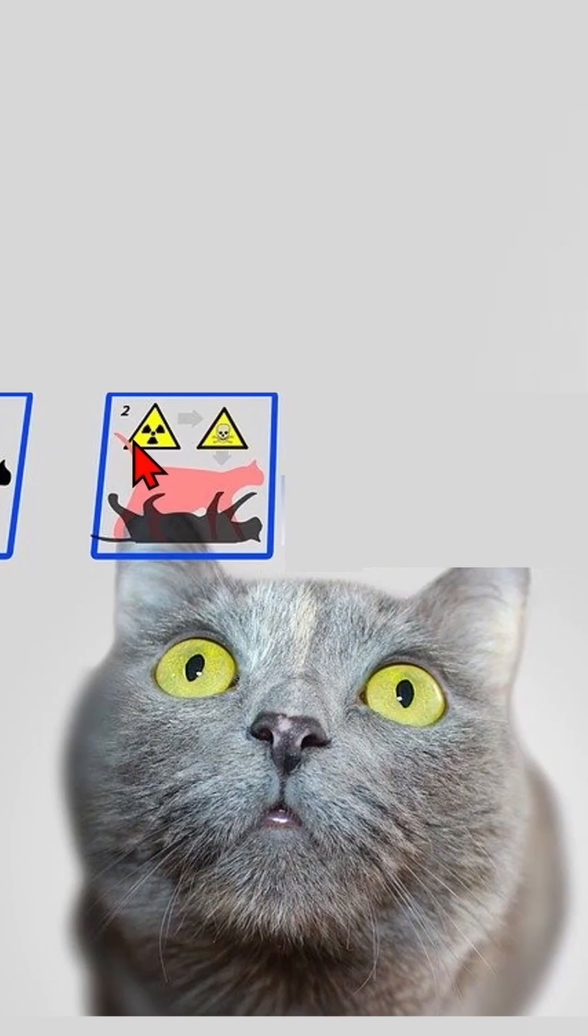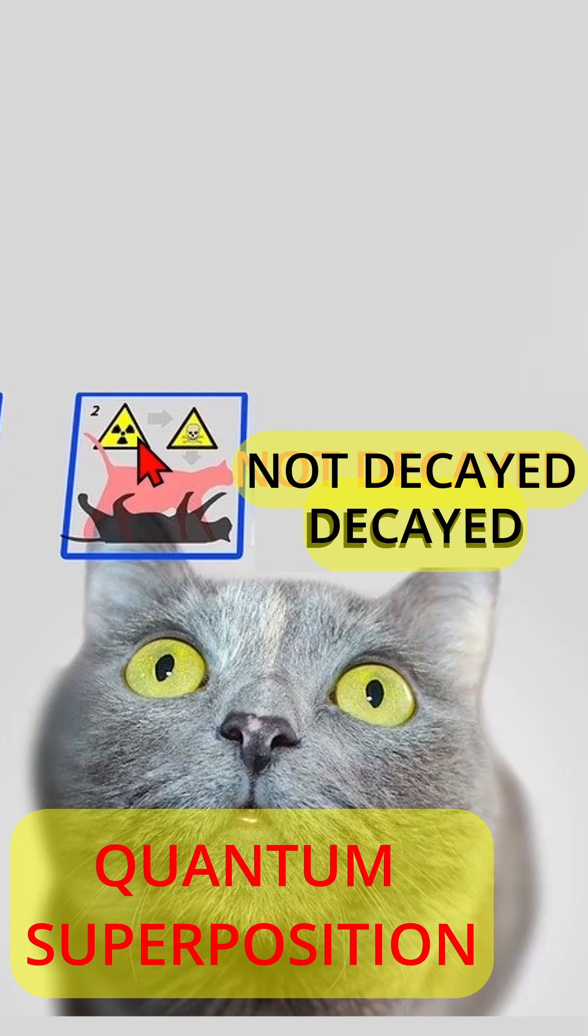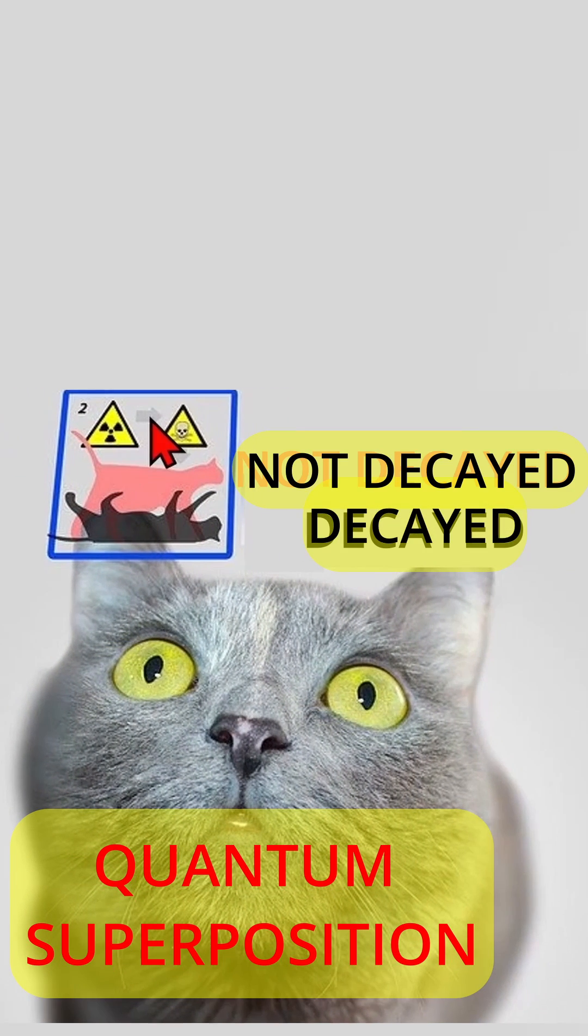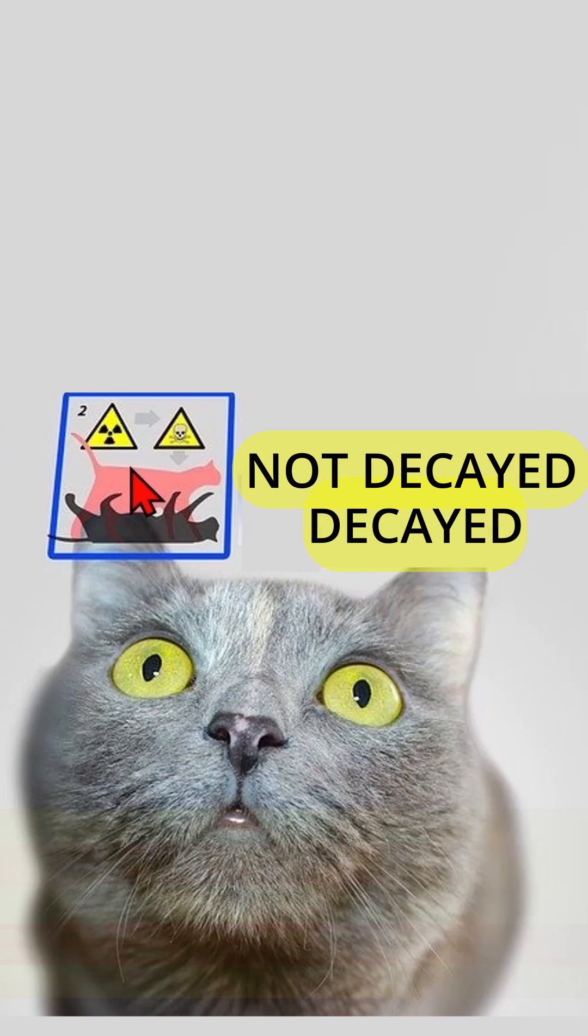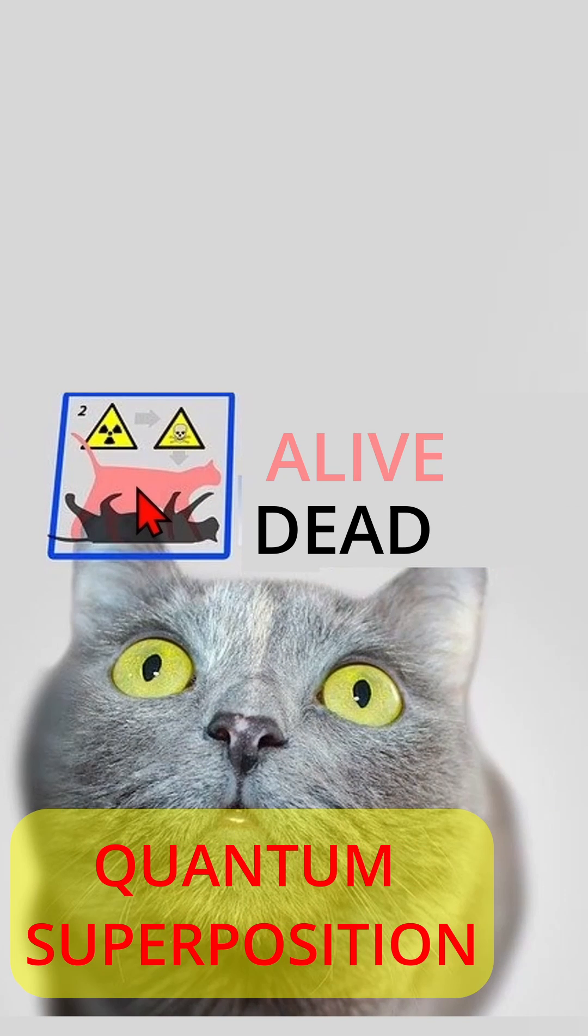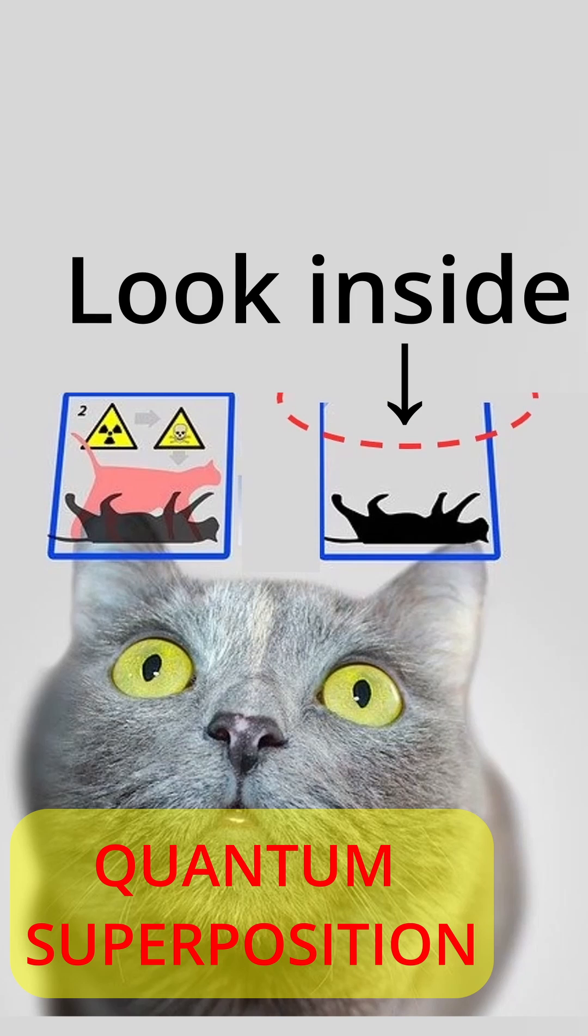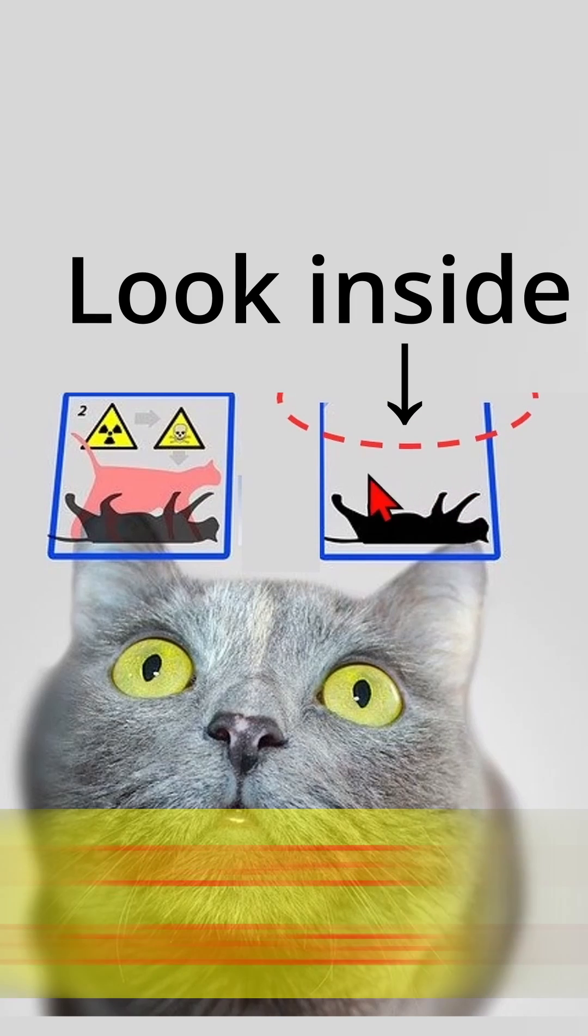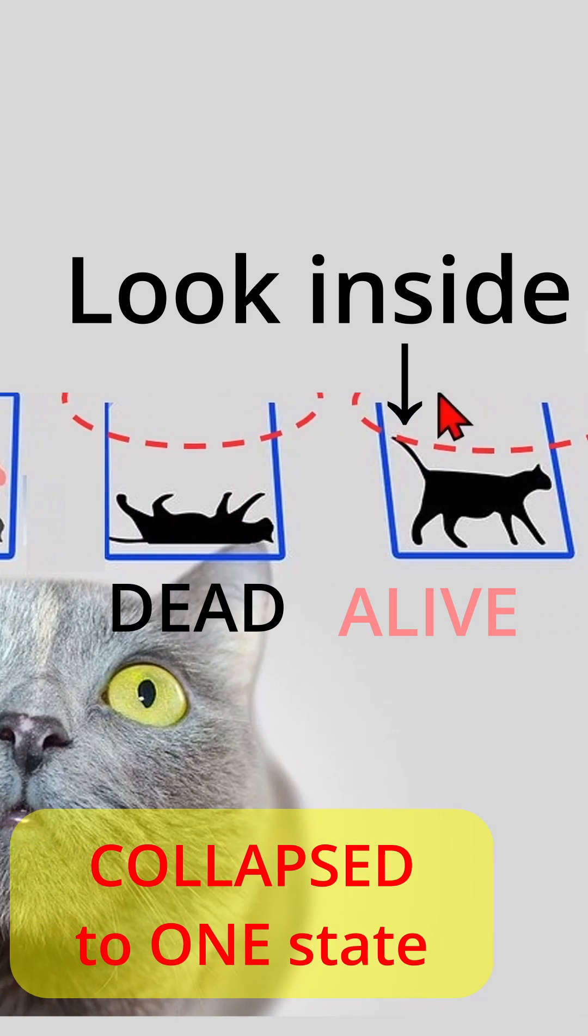Just as the radioactive source is simultaneously in a quantum superposition decayed and not decayed, therefore also the cat is simultaneously both dead and alive. It is only when we make an observation that we either observe the cat is dead or alive.